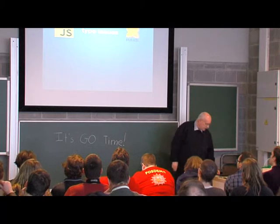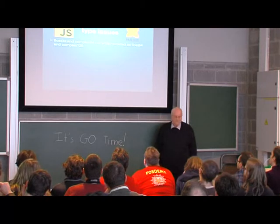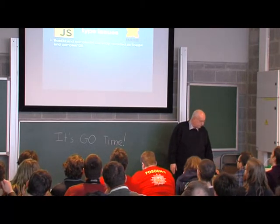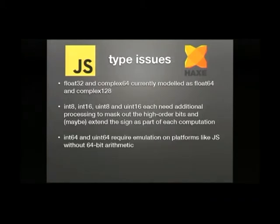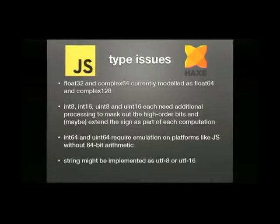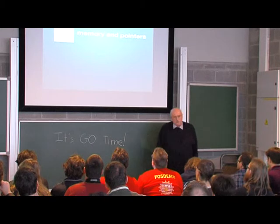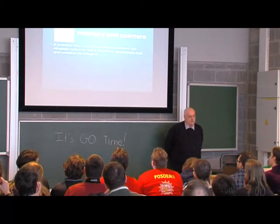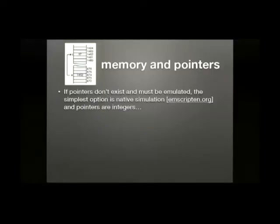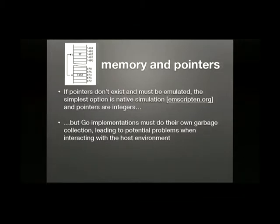There are some type issues, as you would expect, between Go, JavaScript, and Haxe. There are no small floats. If you've got small integers, you've got to mask them and sign-extend them every time — this is the same problem that Emscripten has when it compiles C to JavaScript. Similarly, for int64s, you've got to emulate them on some platforms. Strings can be a different encoding on one platform versus another, so you've got to work around that. And one of the biggest issues is memory and pointers — some of these platforms don't have pointers, so you've got to emulate them. Emscripten does it by creating an array which is the memory, but the problem is that garbage collection activities can collide with one another.